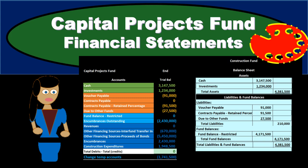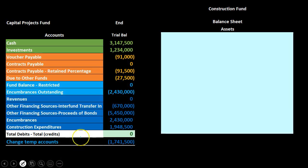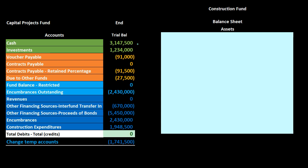In this presentation we will look at an example problem putting financial statements together related to the capital projects fund. Our information on the left-hand side is the trial balance for the capital projects fund — assets in green, liabilities in orange, the light blue being equivalent to the equity section in a for-profit organization, and the dark blue being equivalent to the income statement section. The debits are non-bracketed numbers and the credits are bracketed.